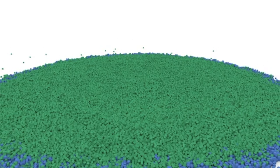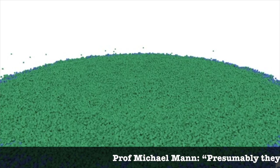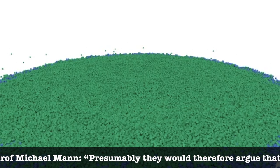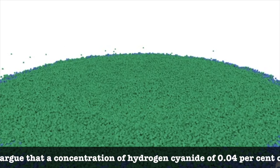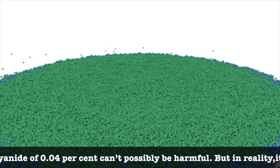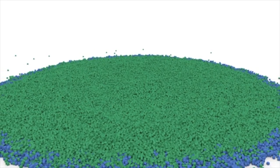Professor Michael Mann at Penn State University says that presumably these people would therefore argue that a concentration of hydrogen cyanide of 0.04% couldn't possibly be harmful, but in reality it's fatal. Just like the so-called science in this clip, I suppose. Fatally flawed.